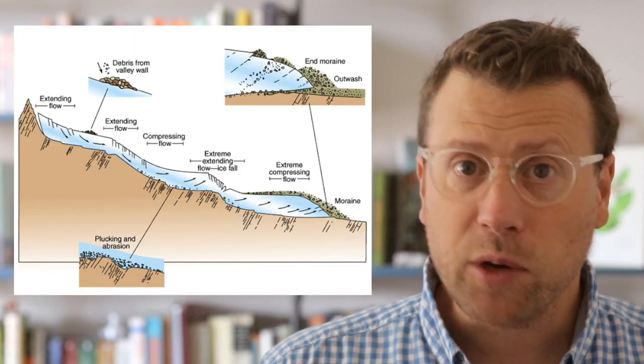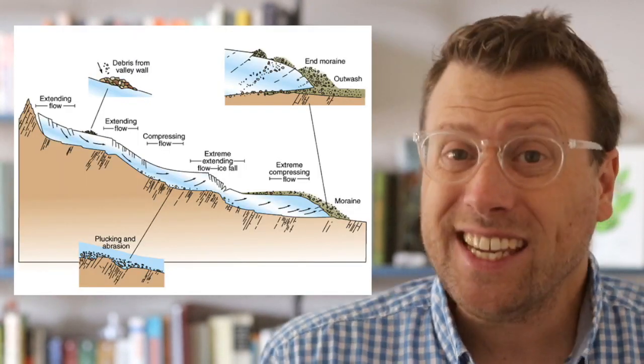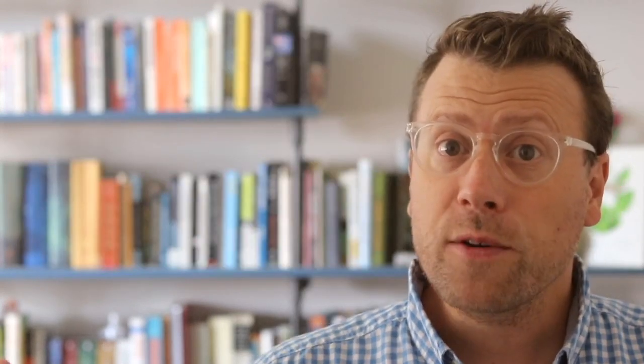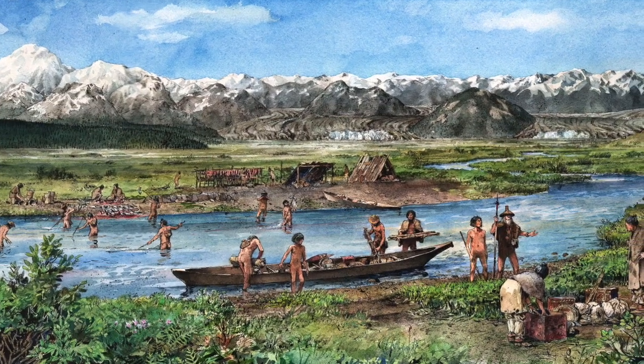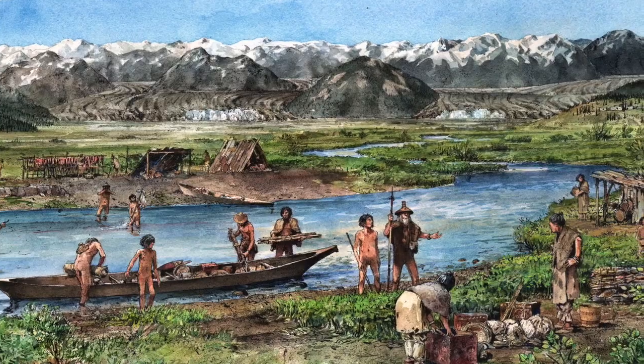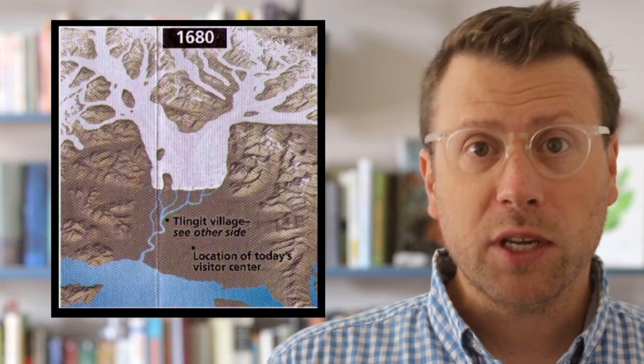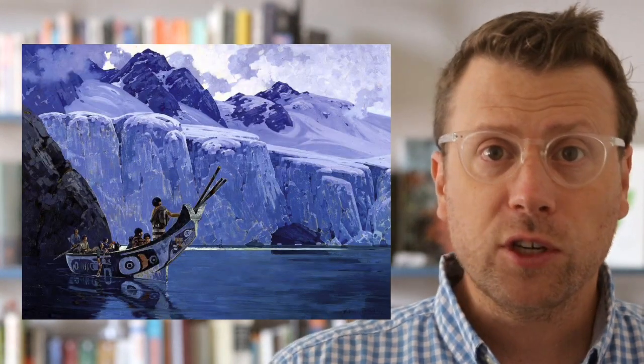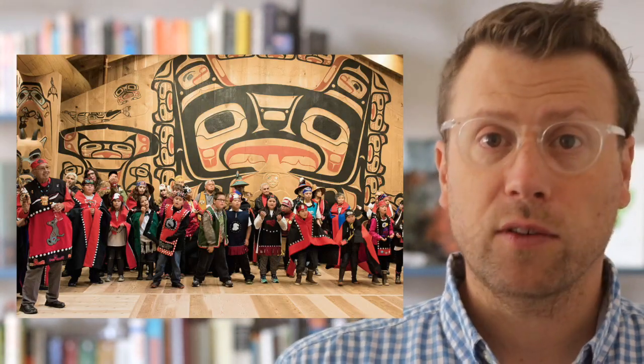Crevasses can also form due to changes in the underlying topography, extending when ice flows over bumps and contracting or healing when ice flows over depressions. Four hundred years ago, there was no Glacier Bay — only a broad flat valley with a large river flowing through it, populated by indigenous Tlingit communities settled on the banks of the river. Starting around the year 1700, glaciers began to rapidly advance, swallowing up the valley. Geologic reconstructions indicate the ice advanced about five kilometers per year on average, displacing the Tlingit villages, which are recorded in oral traditions as part of the cultural history of the modern Huna Tlingit.